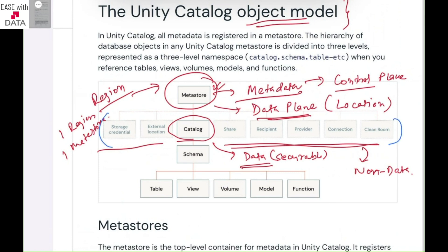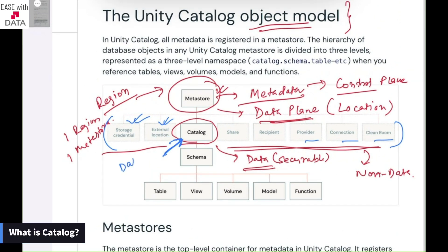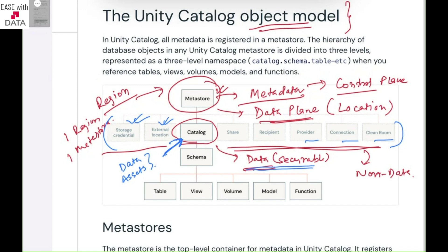From the left-hand side, we have a lot of objects: storage credentials, external location, share, recipient, provider, connection, and clean rooms. We are not going to discuss all of them today. Catalogs are basically used to maintain our data assets — it doesn't matter whether the data asset is structured, unstructured, or semi-structured. All securable data assets lie under catalog. The rest — share, recipient, provider, connection, clean room, storage credential, or external location — are used to maintain non-data securable objects.